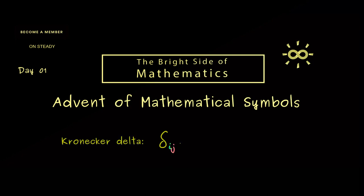And the definition is not complicated at all. It's either 1 or 0. Indeed, it's only 1 when i is equal to j, and in all other cases it's equal to 0.